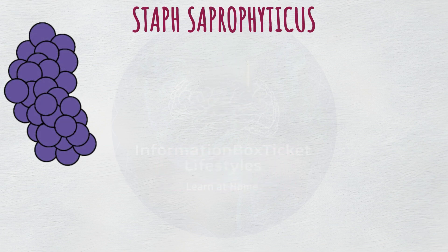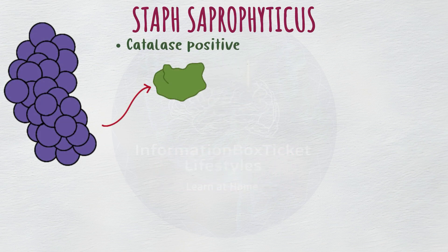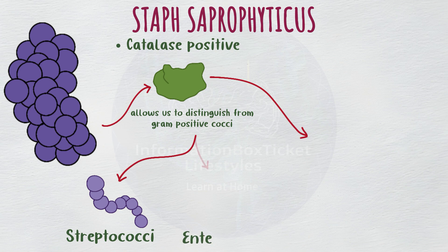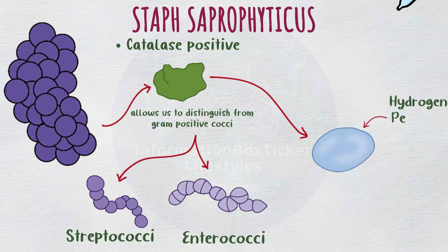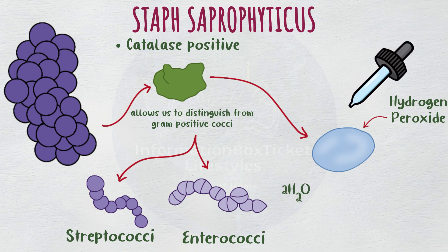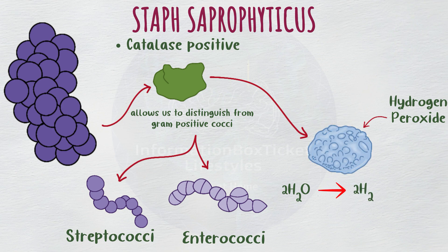Because Staph saprophyticus is catalase-positive, it produces the catalase enzyme. This allows us to distinguish Staph saprophyticus from catalase-negative gram-positive cocci, such as streptococci and enterococci. A few drops of hydrogen peroxide are introduced to the suspected bacterial colony to test for this. Hydrogen peroxide splits into water and oxygen when catalase is present, as it is in Staph saprophyticus, causing the combination to froth.